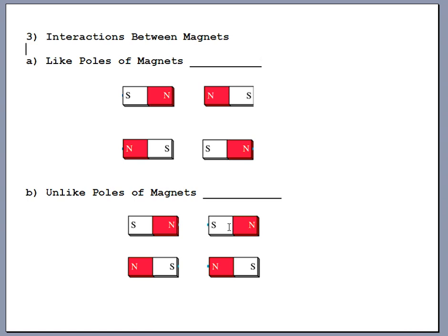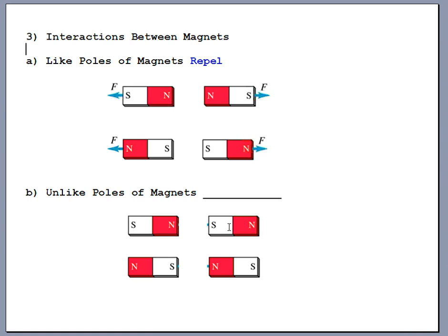Interactions between magnets — probably something you learned in kindergarten. If you have like poles near each other, two norths or two souths, they repel. This is totally different from electrostatics even though it follows the same pattern to remember. Unlike poles — a north and a south — attract each other. We don't talk about a positive and negative end of a magnet; we talk about a north end and a south end, but it does follow that same attraction/repulsion pattern.